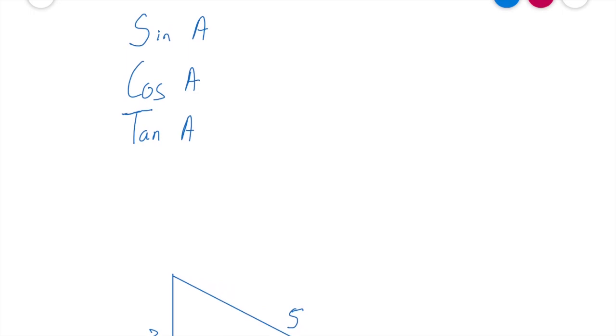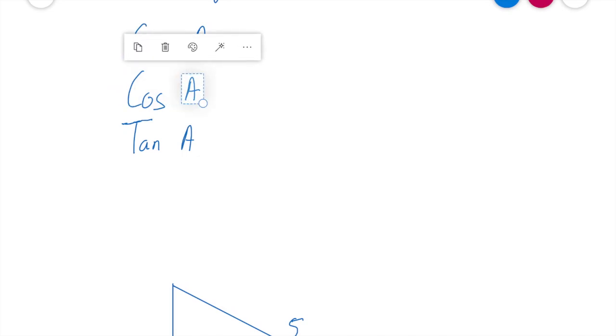So if we look up here, one thing I want you to be aware of is when I refer to A, I'm talking about an angle. So when I'm getting sine of A, it's sine of an angle called A, cos of an angle called A and tan of an angle called A.